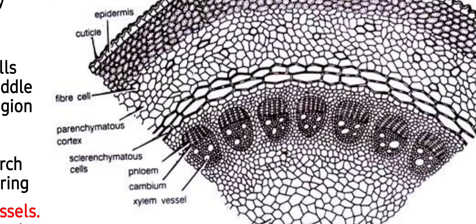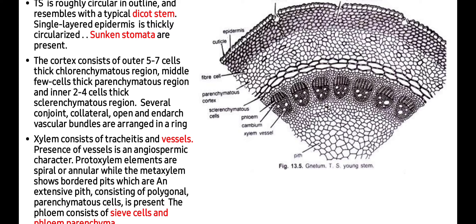Since chlorenchyma is present, the stem is also supposed to perform photosynthesis, while sclerenchyma provides strength to the stem. Several conjoint, collateral, open, and endarch vascular bundles are arranged in a ring, as in the dicot stem. Conjoint means both xylem and phloem are present in the same radius; collateral means phloem is outside and xylem is inside; open means cambium is present; and endarch means protoxylem is towards the center. Xylem consists of tracheids and vessels — presence of vessels is an angiospermic character.